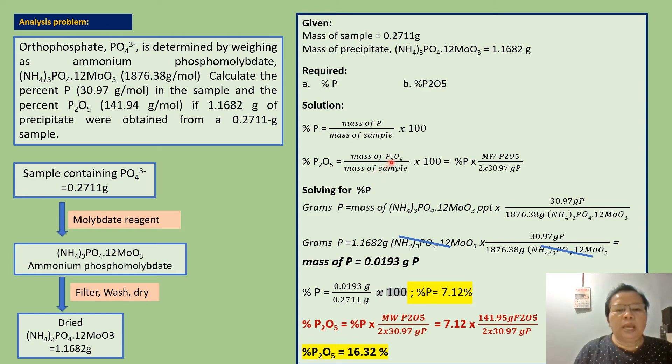Mass of P2O5 divided by mass of sample times 100. But since the percent phosphorus is already given, we can also solve for percent P2O5 using this formula: percent P2O5 equals percent P times the molecular weight of P2O5 over 2 times 30.97 grams of phosphorus.